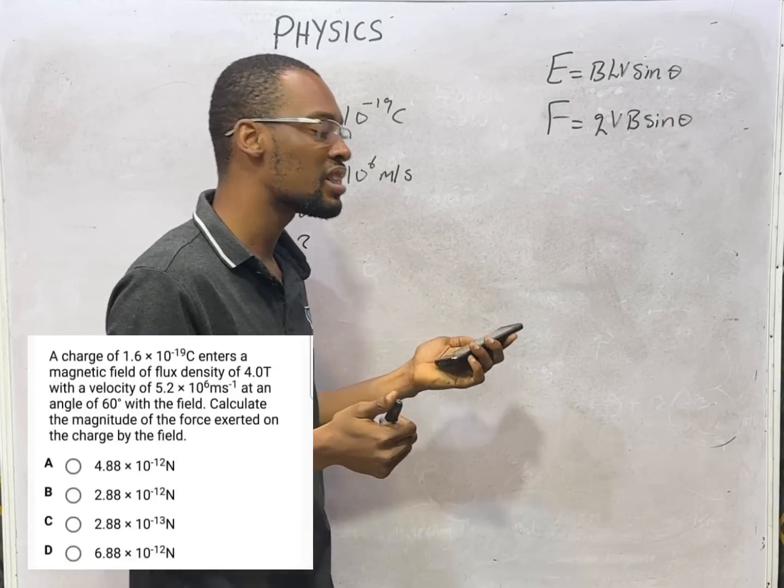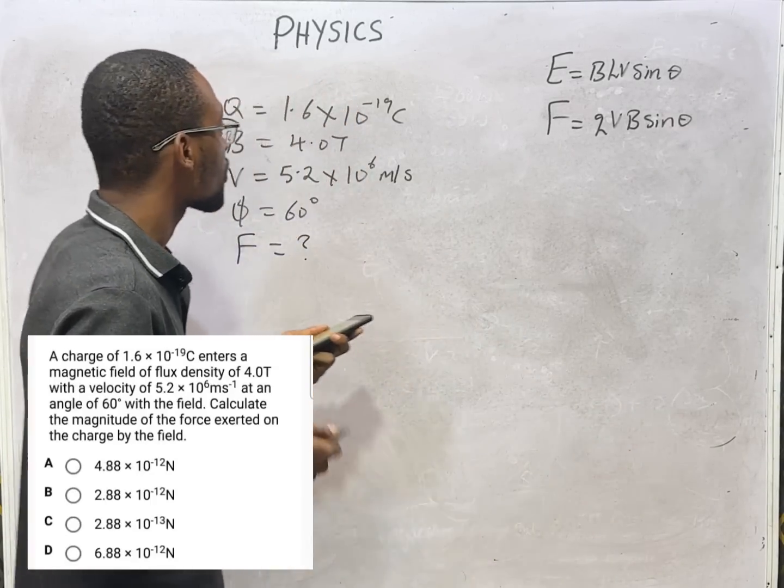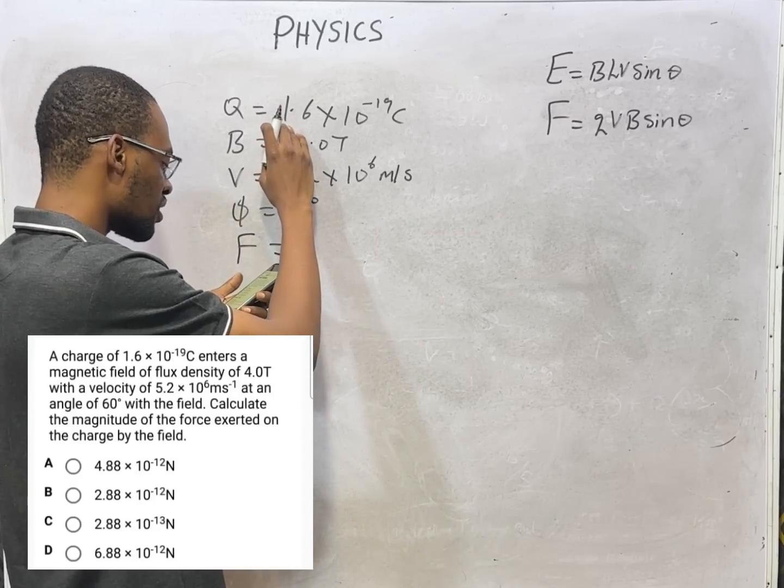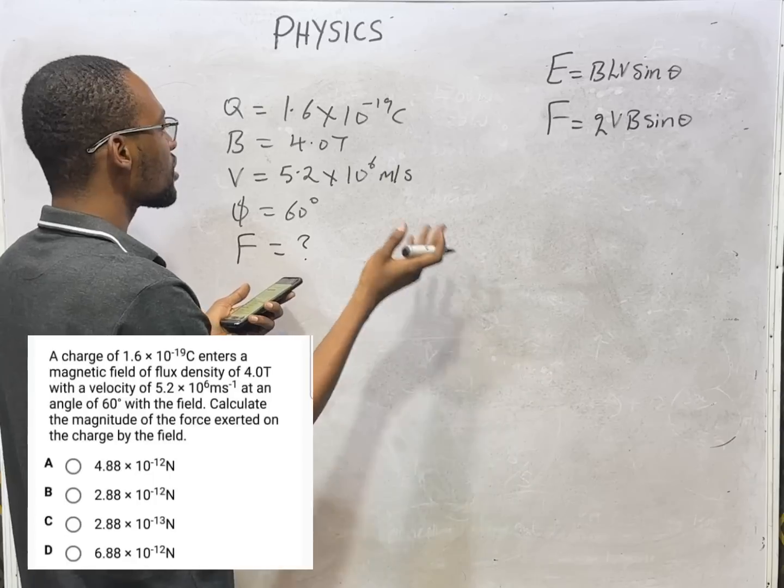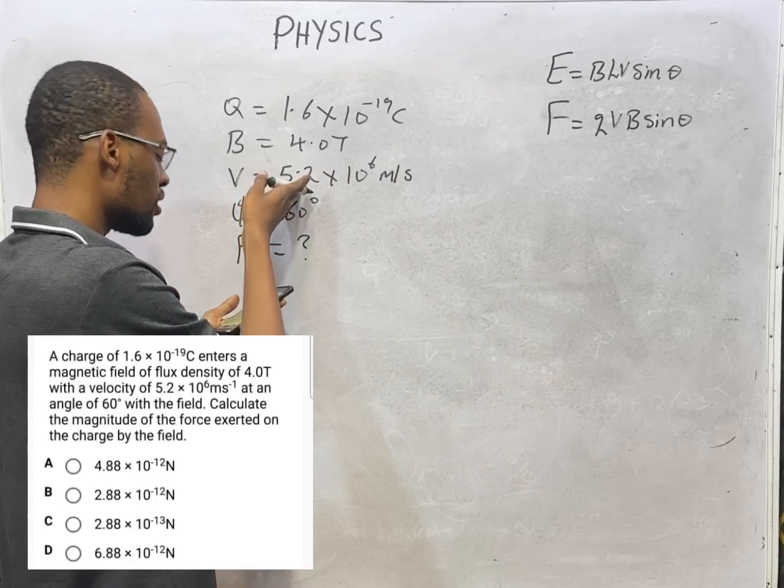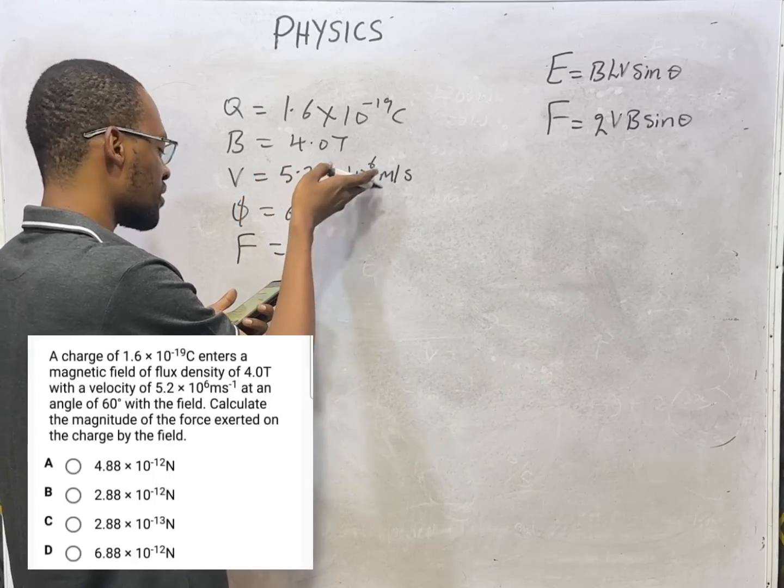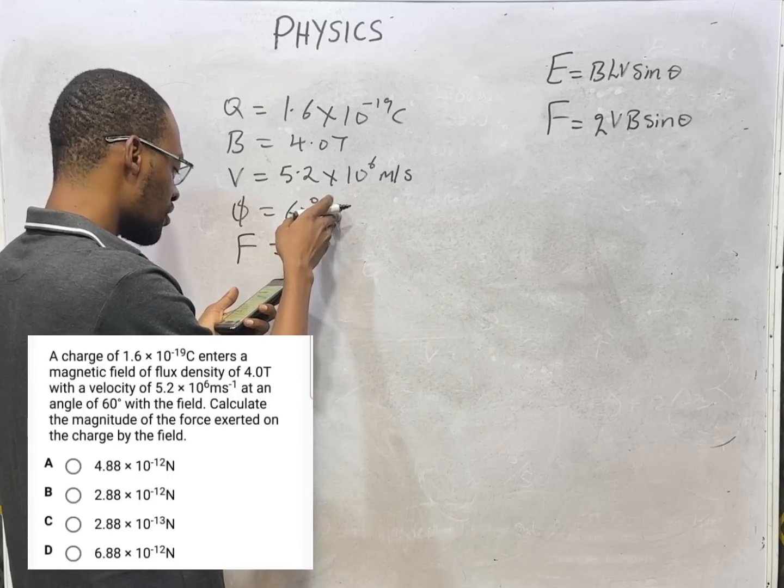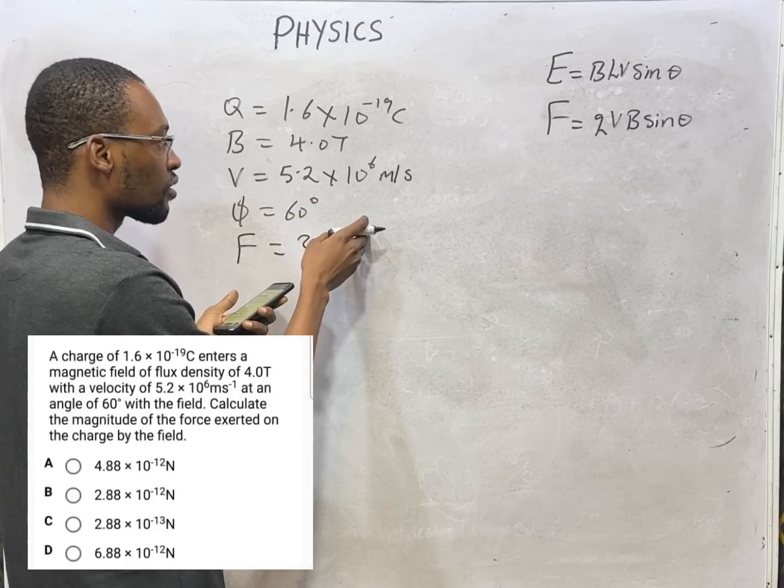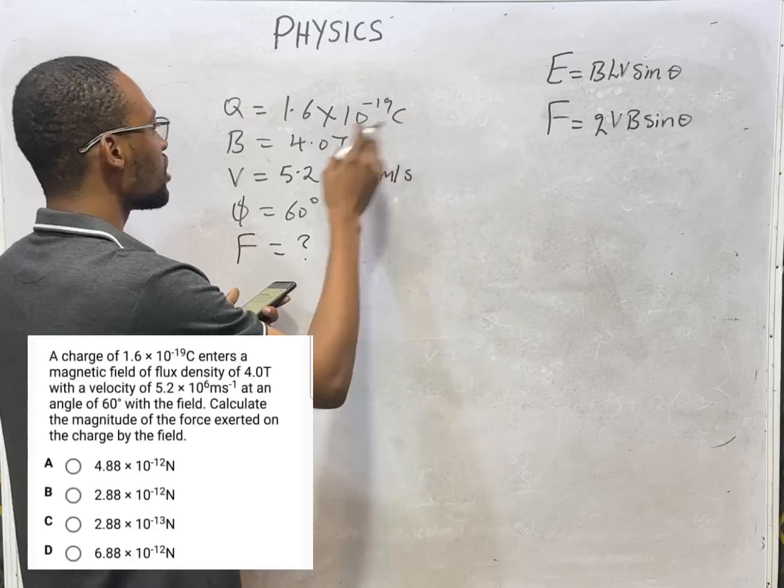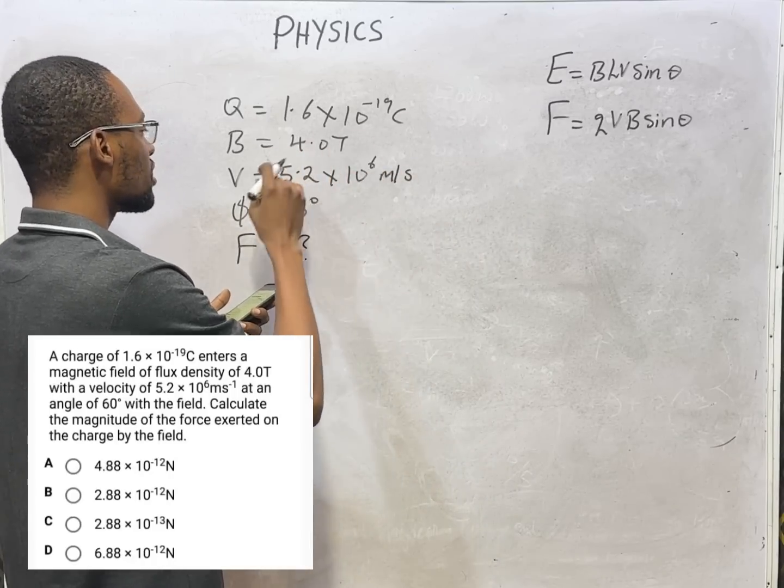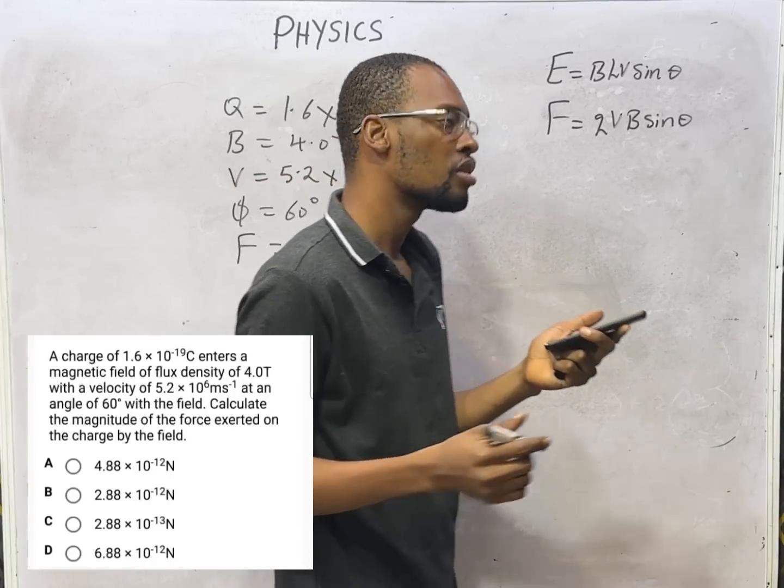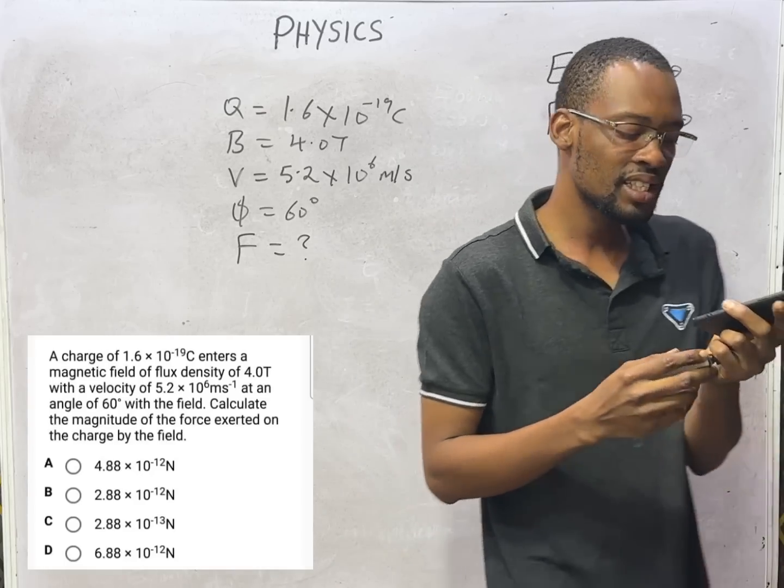Your Q is charge 1.6 × 10^-19 times v velocity 5.2 × 10^6 meters per second times B, which is 4 Tesla, times sin 60 degrees. Once you multiply straight, you should get 2.88 × 10^-12 Newtons.